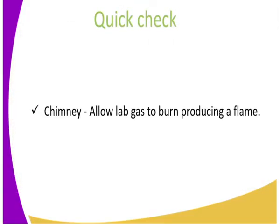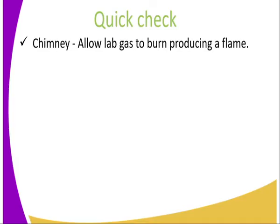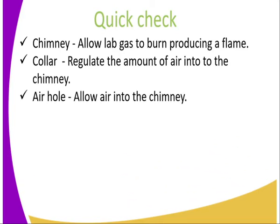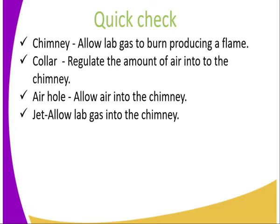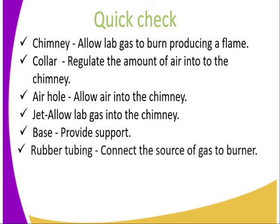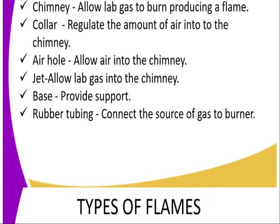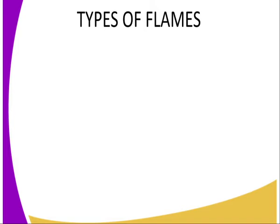Let's do a quick check. The jet allows laboratory gas into the chimney. The collar regulates the amount of air that gets into the chimney. The air hole allows air into the chimney. Together they give us a mixture of burning gases — a flame. The base provides support to the Bunsen burner, and the rubber tubing connects the source of gas in the laboratory to the burner.